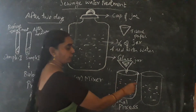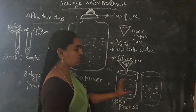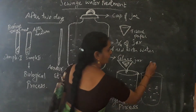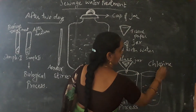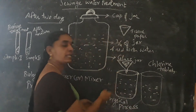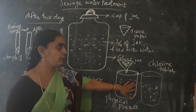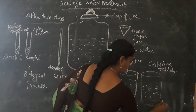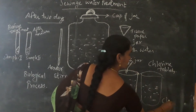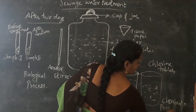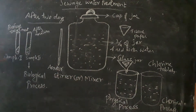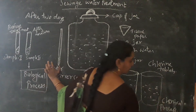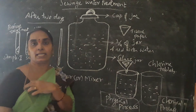After filtering, take the clear liquid from the beaker and add certain chlorine tablets. The remaining foul smell in the water will also be cleared and you get completely treated water. This is the chemical process. So this wastewater treatment involves a biological process, a physical process, and a chemical process.